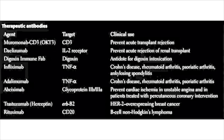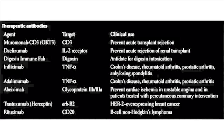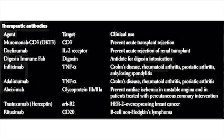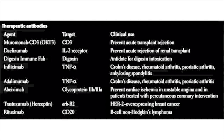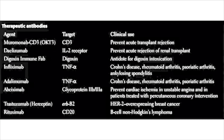Trastuzumab, also known as Herceptin, targets the HER2 protein. HER2 is a gene sometimes overexpressed in certain breast cancers; overexpression leads to increased production of the HER2 protein. If a patient has a cancer overexpressing HER2, using an anti-HER2 monoclonal antibody such as trastuzumab can be quite helpful in treating the tumor.